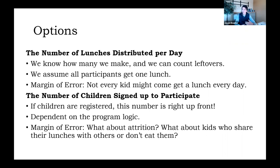Another option — and this is much easier to collect — is we know how many children have signed up to participate in the program. If children register or sign up, we have that number right up front, though it's going to be dependent on the way the program works. If children don't have to sign up, I can't use this data point. There is still error involved here: by counting just the number of students who sign up, I have no way of knowing about attrition — how many students stop showing up over the summer — or kids who get a lunch and share it with friends or siblings, or kids who take a lunch but don't eat it.